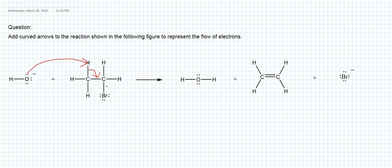The carbon–bromine bond has to break, so we start the arrow from that bond and end the arrow at bromine, where the lone pair has to move. Bromine already has three lone pairs and this bond will become its fourth lone pair.